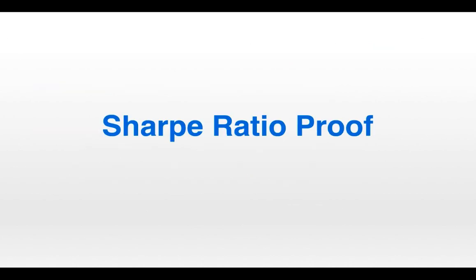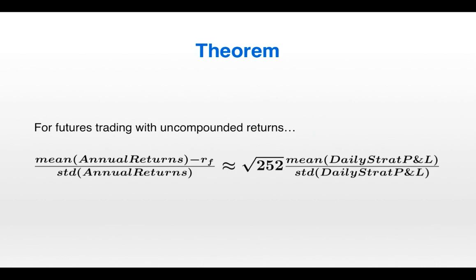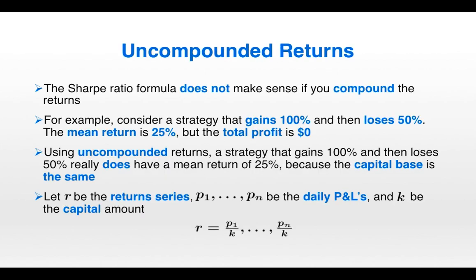Now we're going to get into the Sharpe ratio proof. The theorem states that for futures trading with uncompounded returns, the mean of annual returns minus the risk-free rate divided by the standard deviation of annual returns — the classical Sharpe ratio definition — is equivalent to the square root of 252 times the mean of daily strategy P and L divided by the standard deviation of daily strategy P and L. The risk-free rate disappears, returns are swapped for P and L, and the square root of 252 appears. The first thing to discuss is the assumption of uncompounded returns — if you compound the returns, the Sharpe ratio formula does not make sense.